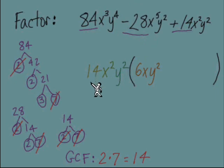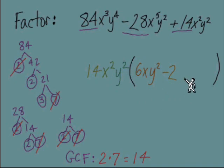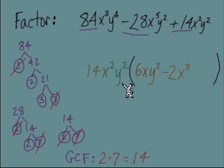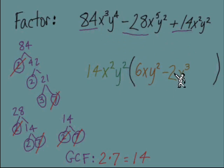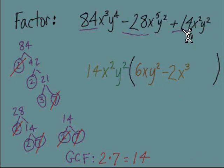For the middle term: 14 times what equals negative 28? Negative 2. For the x's: x² times how many more gives x⁵? We need three more x's, so x³. For the y's: y² times what gives y²? No more y's needed. So the middle term inside is negative 2x³. Remember: however many terms you start with, you still need that same number of terms inside the parentheses — if you start with three, you need three inside.